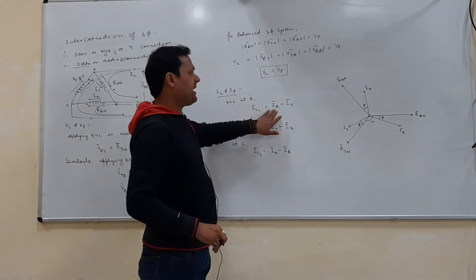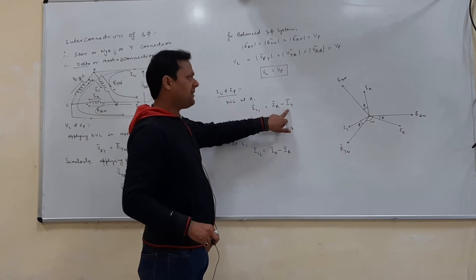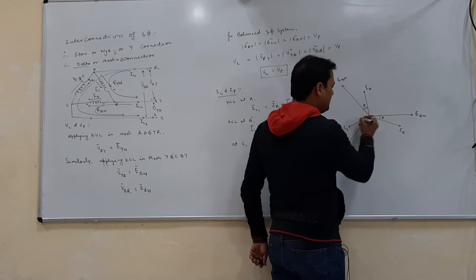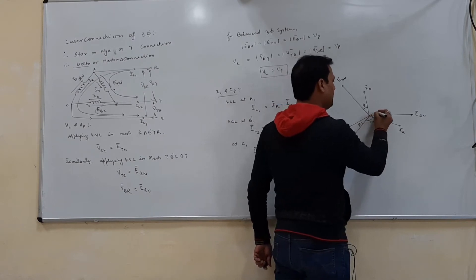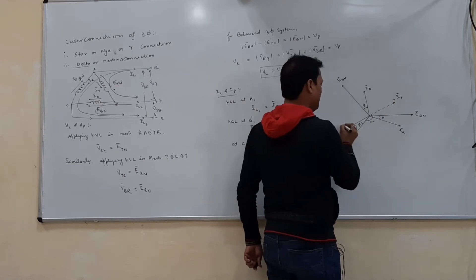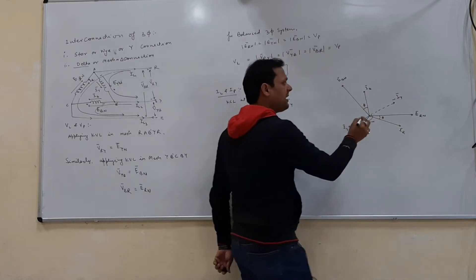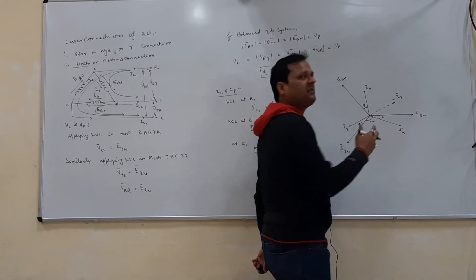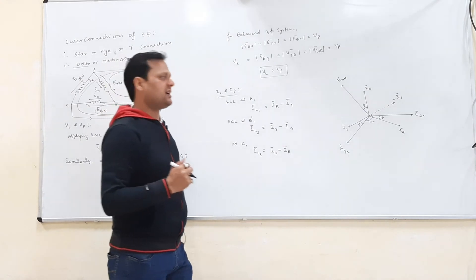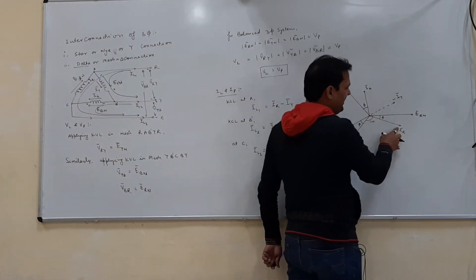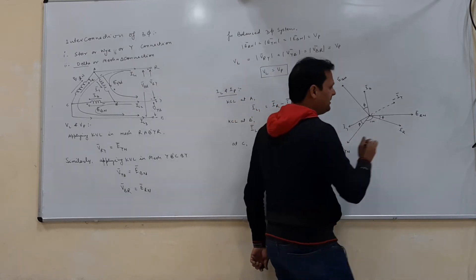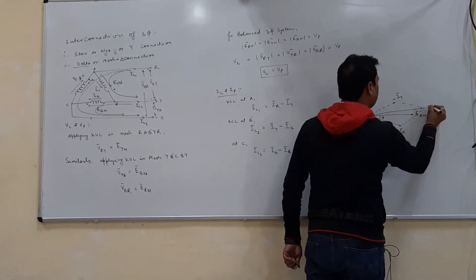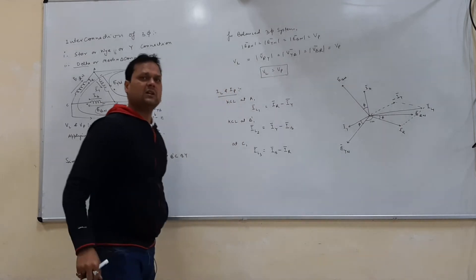IL1 equals IR minus IY. To find the phasor diagram of IL1, we reverse IY to get minus IY, and use the parallelogram method of addition with IR and minus IY to obtain IL1. Since the magnitudes are equal, IL1 bisects the angle between them.